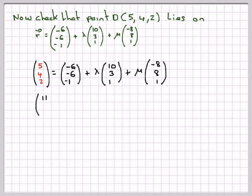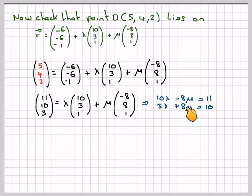Taking these numbers over to here, we're going to have (11, 10, 3) is equal to lambda times (10, 3, 1) plus mu times (-8, 8, 1). From that, we're going to have 10λ - 8μ = 11, we have 3λ + 8μ = 10, and λ + μ = 3. So we've got three equations here.